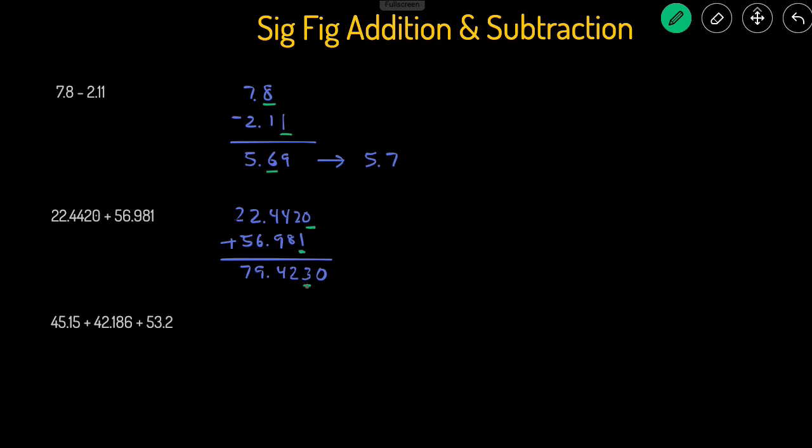Then the 3 is going to be the last sig fig. We look at the number next to the 3 and see that it is less than 5, so that means our final answer will just be that because we're not going to round up the 3.